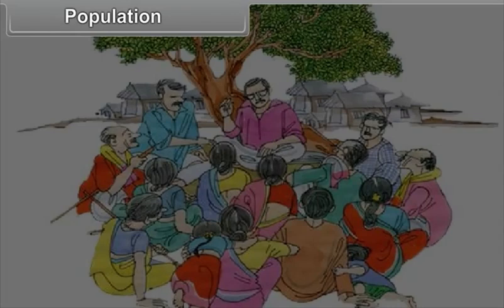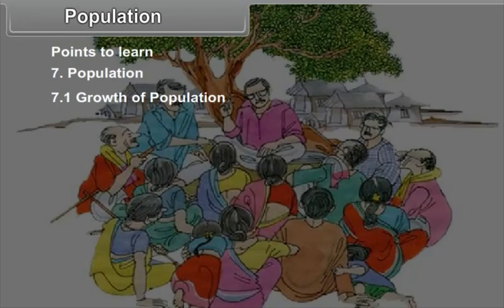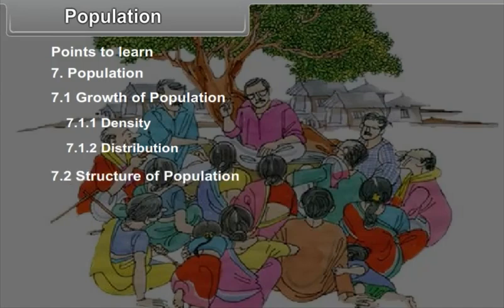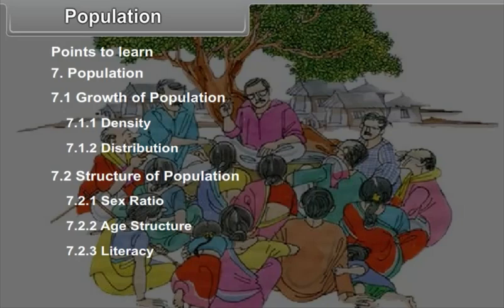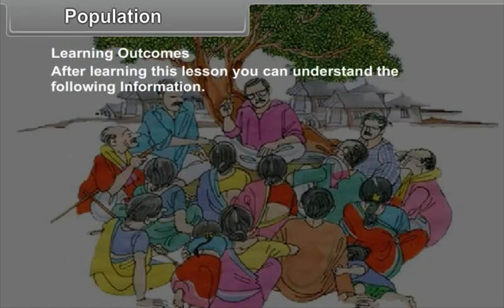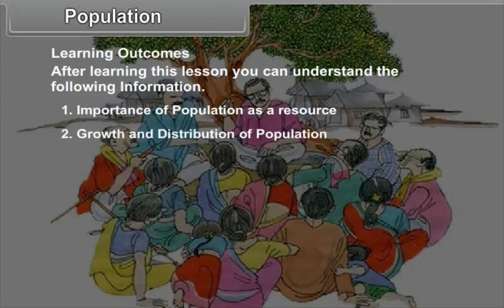Standard 9th Geography, Chapter 7: Population. Points to learn: 7.1 Growth of Population, 7.1.1 Density, 7.1.2 Distribution, 7.2 Structure of Population, 7.2.1 Sex Ratio, 7.2.2 Age Structure, 7.2.3 Literacy, 7.3 Migration. Learning outcomes: after learning this chapter you can understand the importance of population as a resource, growth and distribution of population, density, and migration.